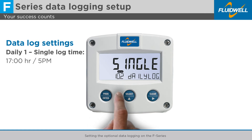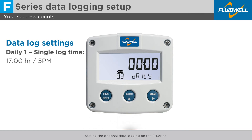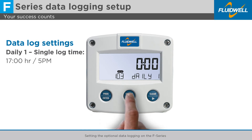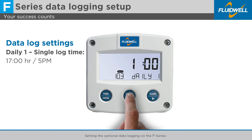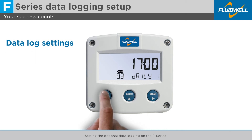Press Select to go to Menu 10.3, Daily 1, to set the single log time. Press Prog to change the time setting. Use Select and Clear to set it to 1700, or 5 pm, or 1700 hours. Press Prog to store this setting.